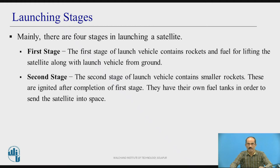The process of placing the satellite in a proper orbit is known as the launching process. Satellites are launched into orbit from an Earth station, and several launching stages are involved. Mainly, there are four stages involved in launching a satellite.